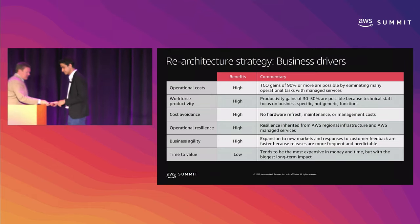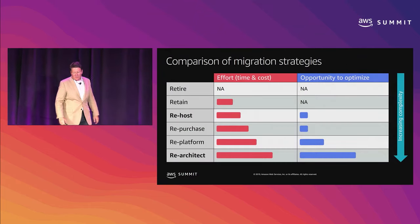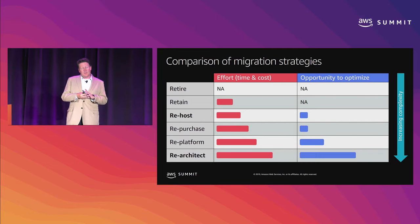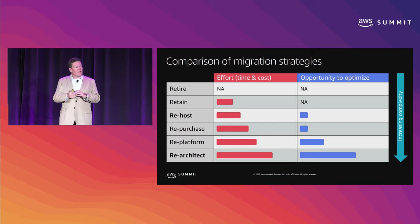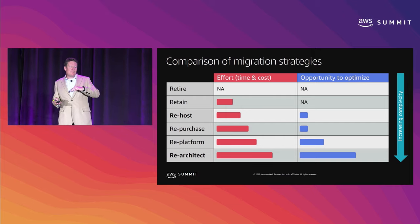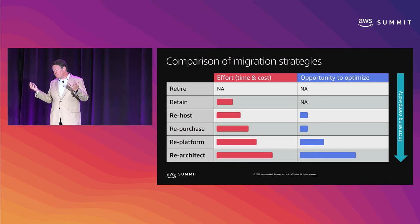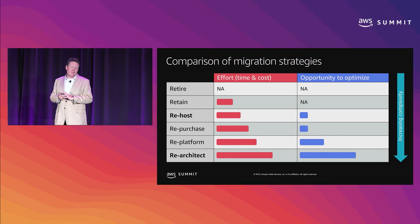Just to summarize before we talk about Strangler: looking at our two bolded patterns — rehost and rearchitect — the trade-off is time versus the value you get from optimization. Much faster to rehost — lift and shift — but your opportunity to optimize and take advantage of the cloud is lower. And we're asserting there's a happy balance between these two options.